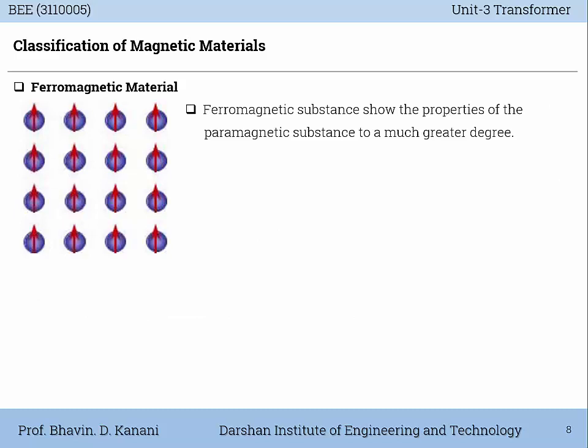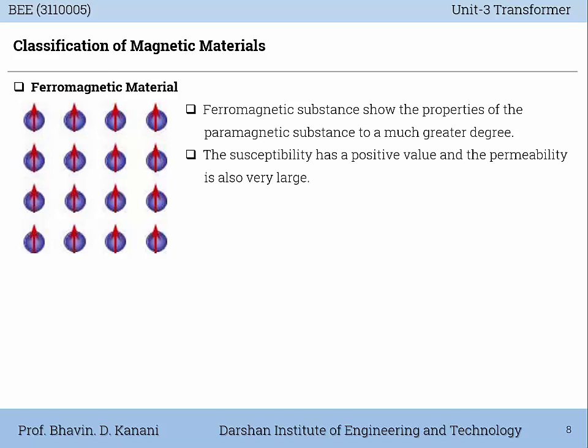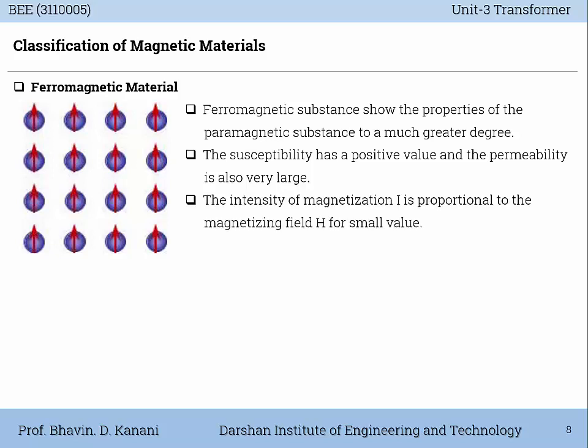Ferromagnetic material: Ferromagnetic substances show the properties of paramagnetic substances to a much greater degree. The susceptibility has a positive value and the permeability is also very large. The intensity of magnetization is proportional to the magnetizing field H for small values. Examples of ferromagnetic materials are iron, nickel, cobalt, and their alloys.